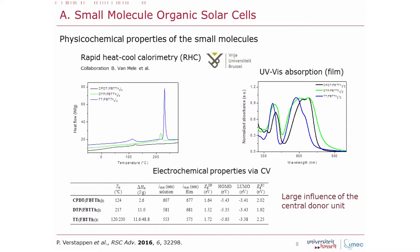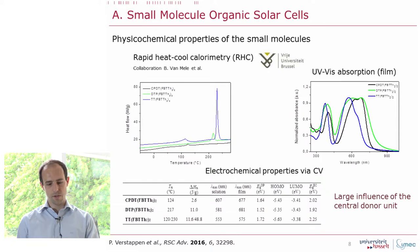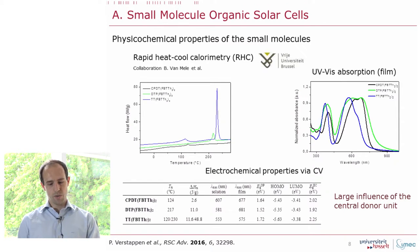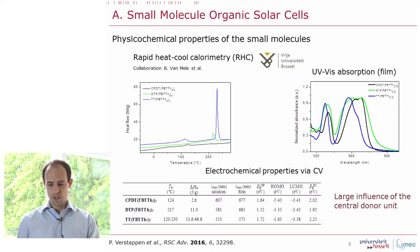What did we observe? For the physical-chemical properties of the small molecules, they are quite different, showing a big influence of the central donor unit. This can be seen in rapid heat calorimetry studies, where we notice a noticeable difference in crystallinity among the three materials. Also, the absorption profiles are quite different for the three materials, and from the HOMO-LUMO point of view there are quite some differences, as expected.